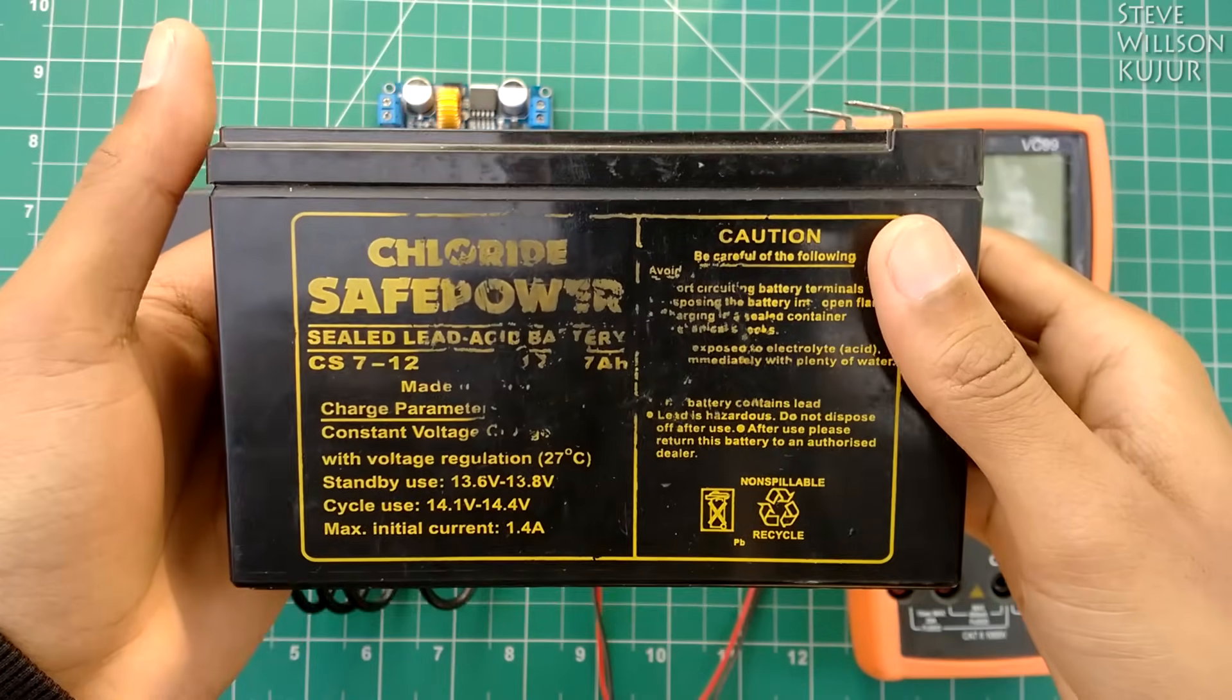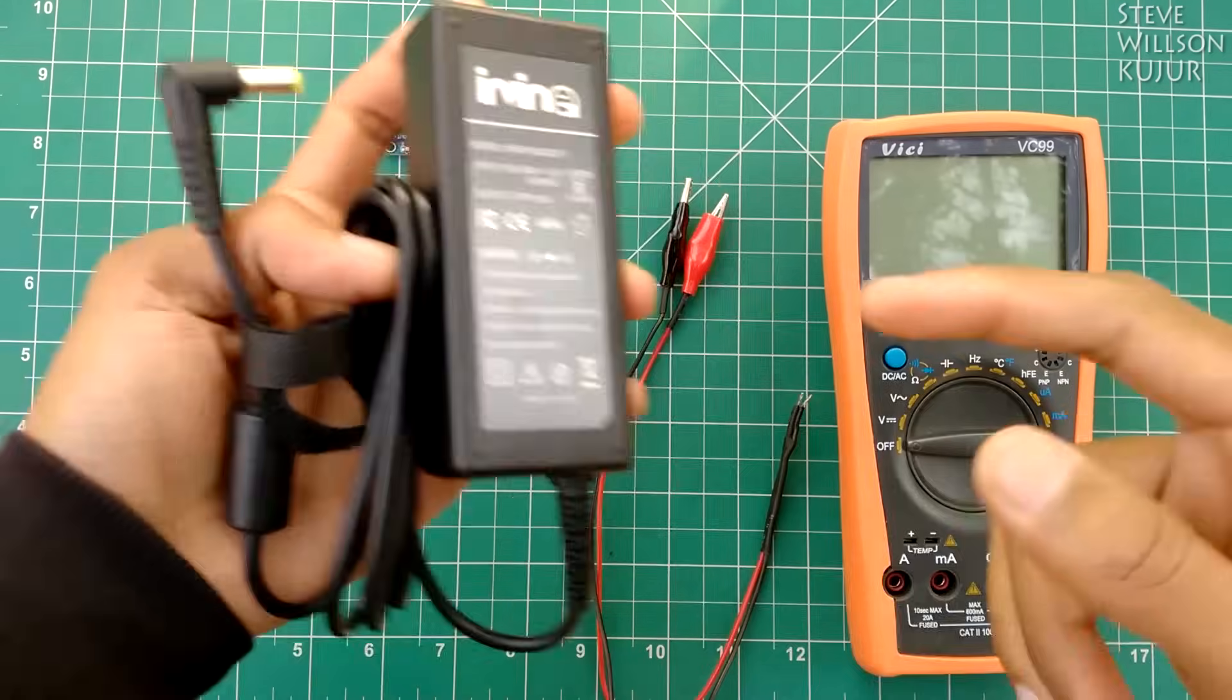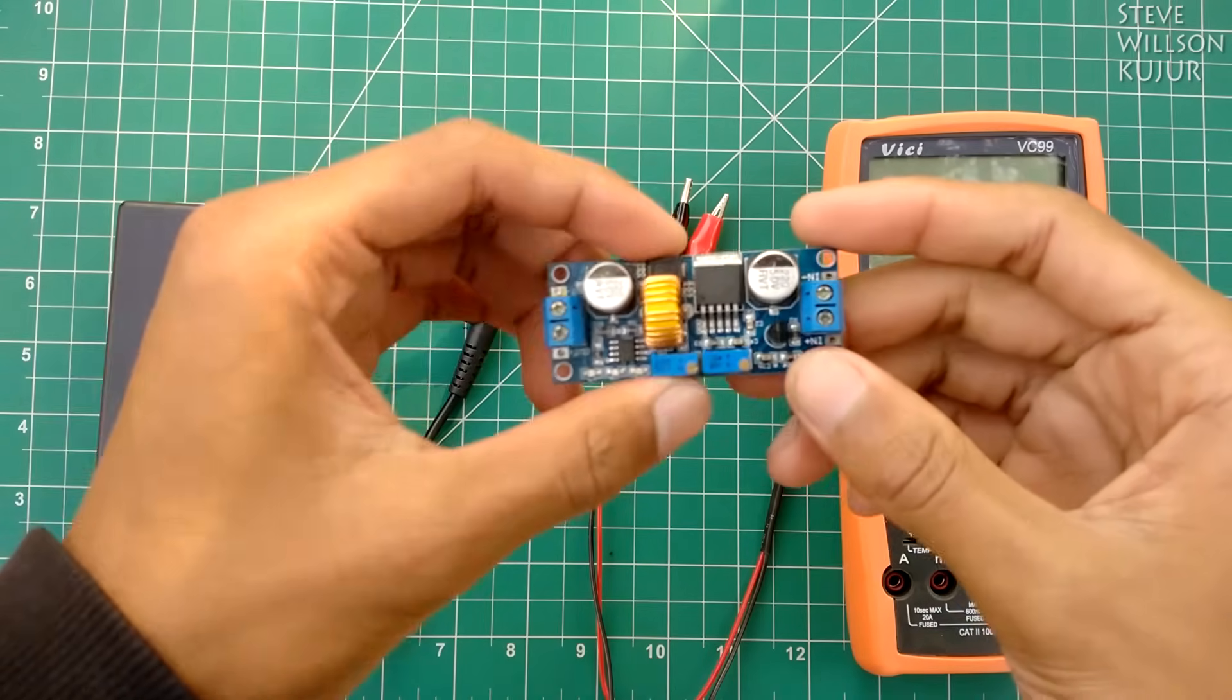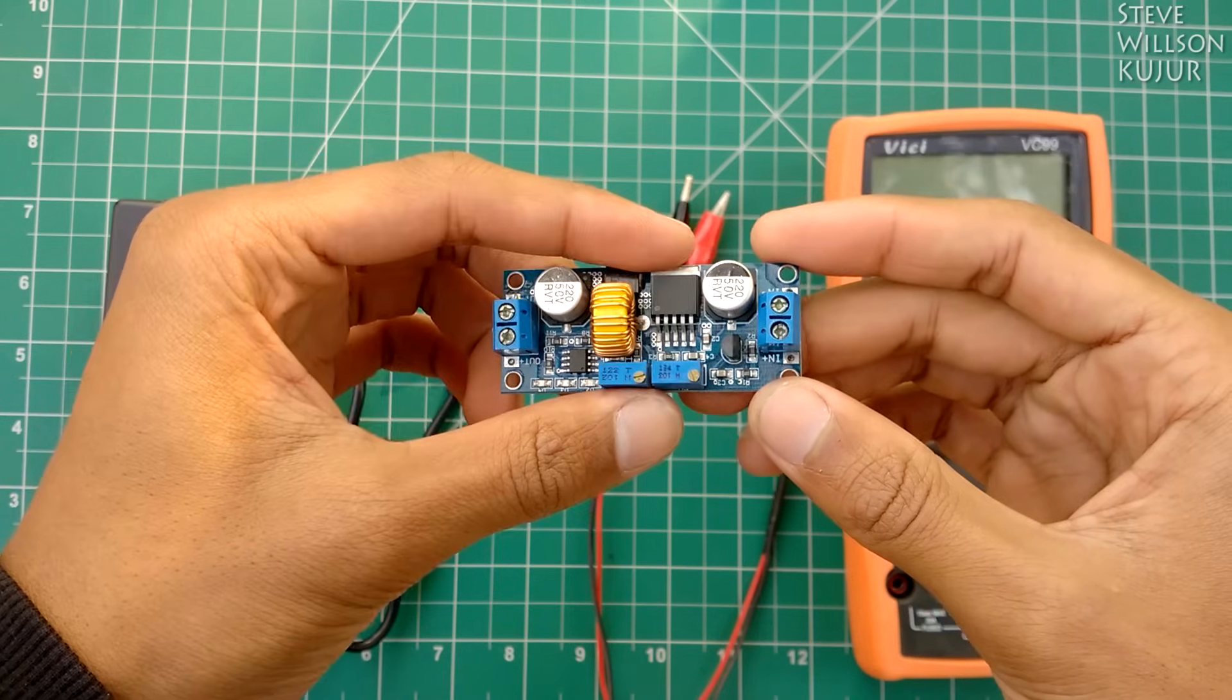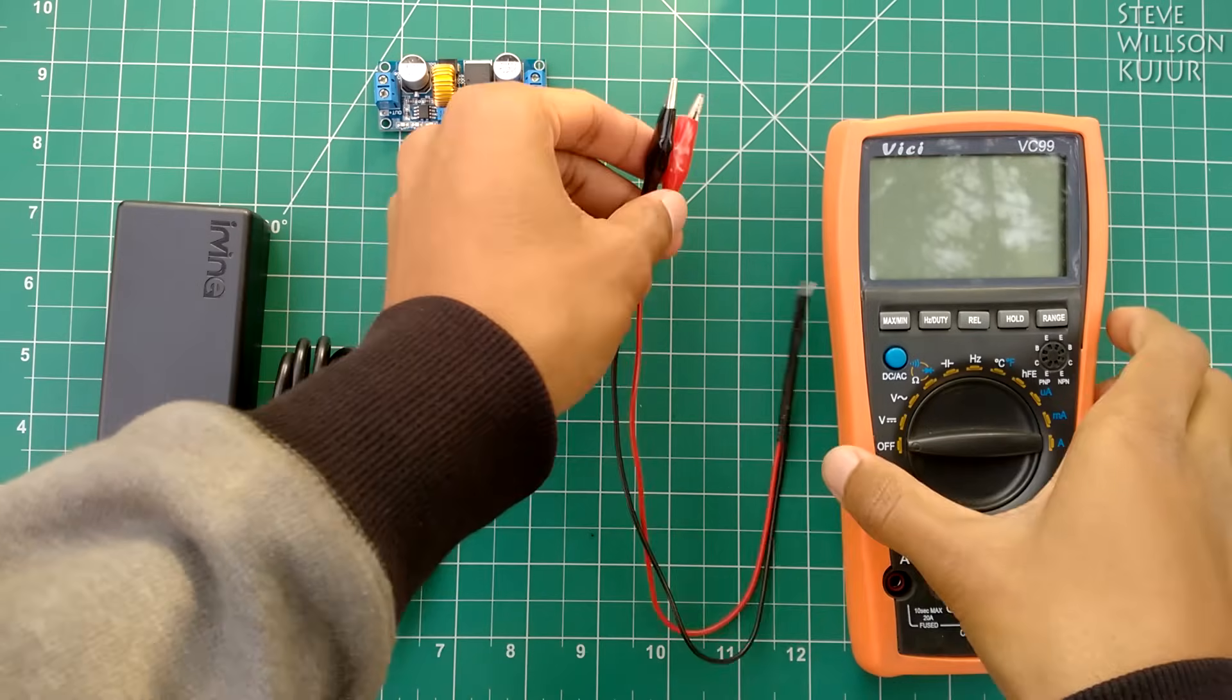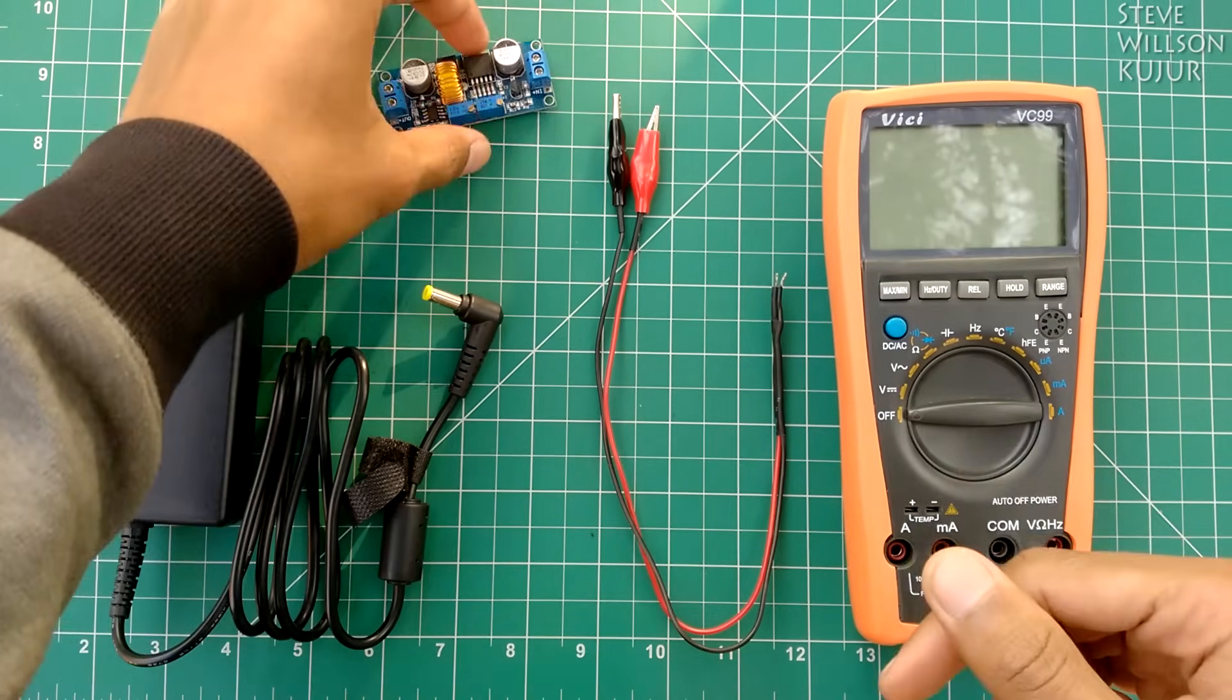Hello YouTube, Steve here, and today I'm going to show you how to make a 12-volt battery charger with a regular 19-volt laptop battery charger. To do this project you need a DC to DC step-down module, two alligator clips, and a multimeter. You can find some useful links in the description below.